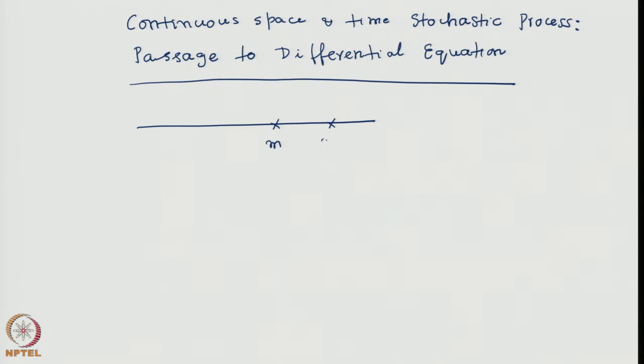In all the previous lectures, while discussing discrete space random walk phenomena, most of our focus has been on nearest neighbor transitions only. To recapitulate: if I have a site m, the next site m plus 1, and the site behind it m minus 1, then at every step the transition is limited to the nearest neighbors — either m to m plus 1 with probability p, or m to m minus 1 with probability q.